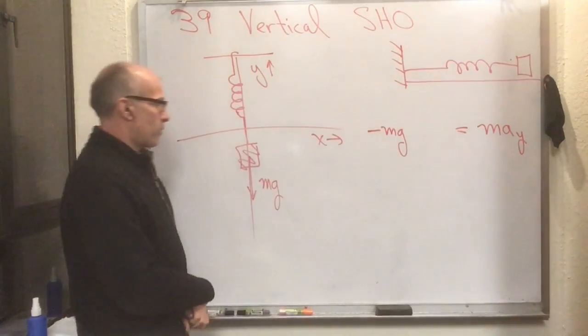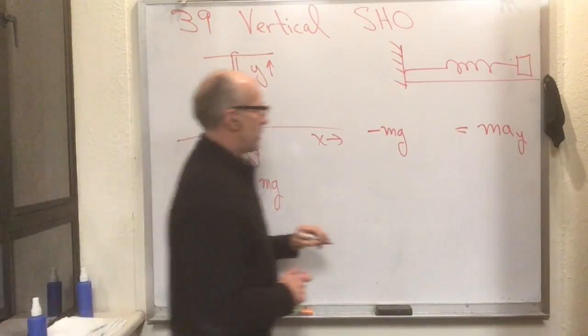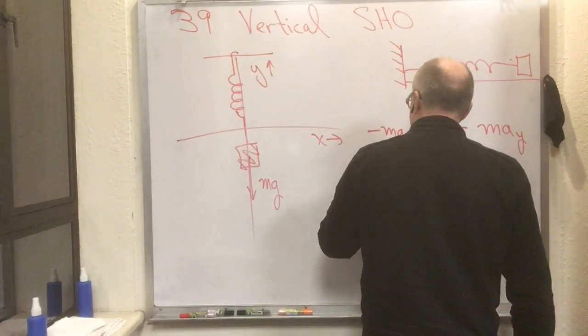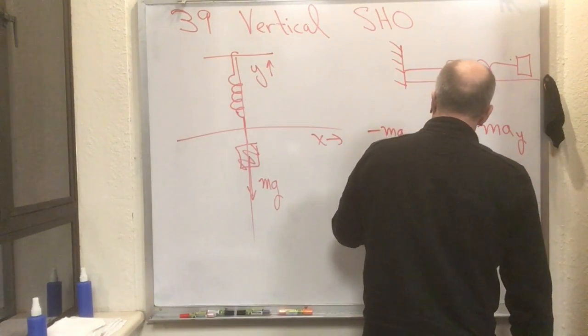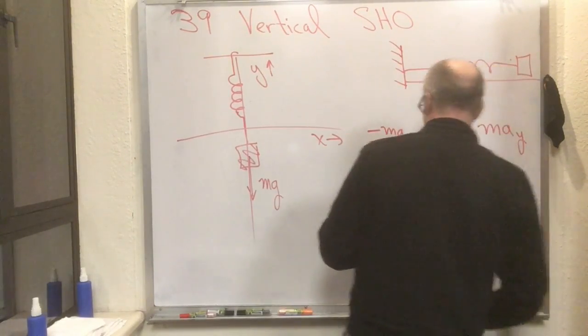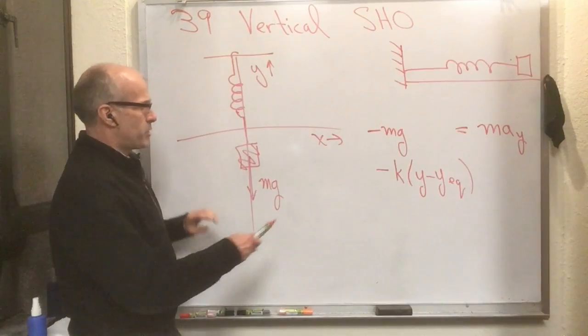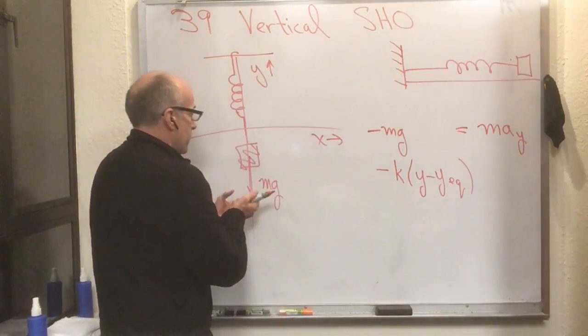Because that's pulling downwards, and the other thing I've got in the y direction—this is where setting up the coordinates properly really starts to matter—I've got minus k times (y minus y_equilibrium). Now watch out here. You've got to make sure you've got the signs right.